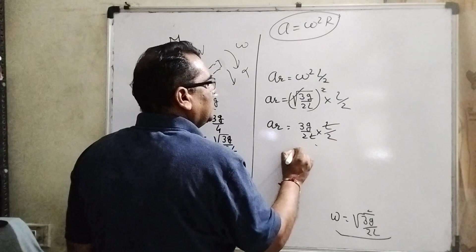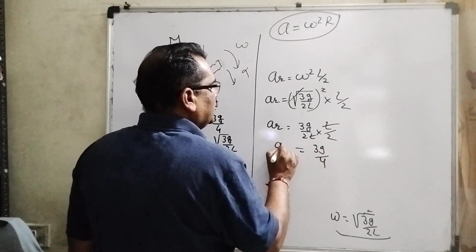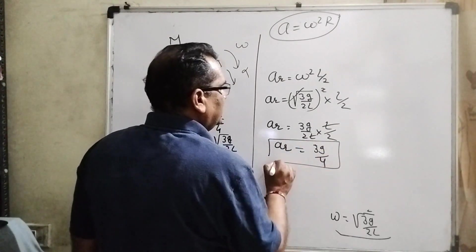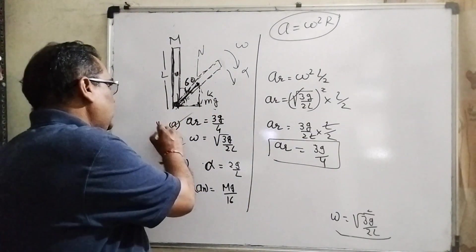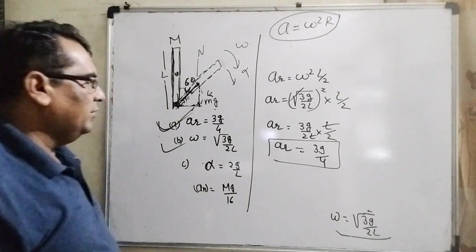Then AR becomes this root and square cancel out, 3g by 2L and L by 2. L, L cancel, 3g by 4. Let us see which option matches to this answer. You can see that option A is correct. AR equal to 3g by 4.